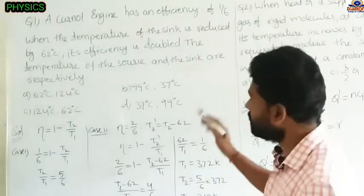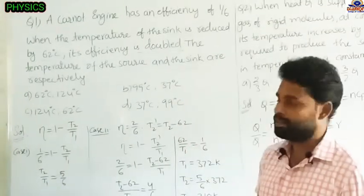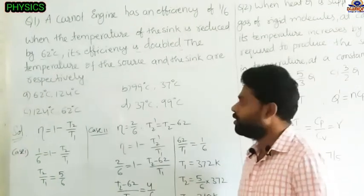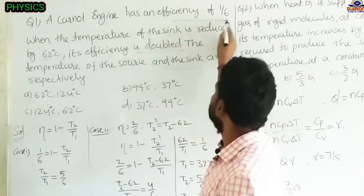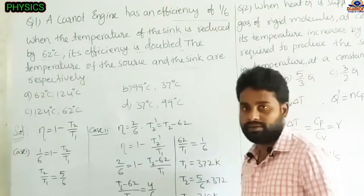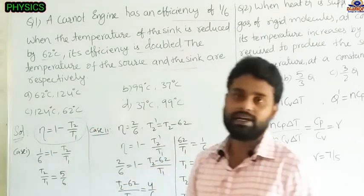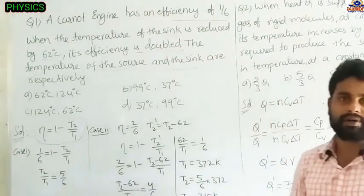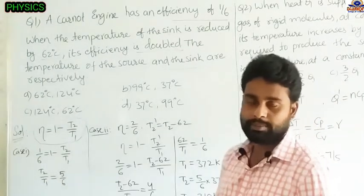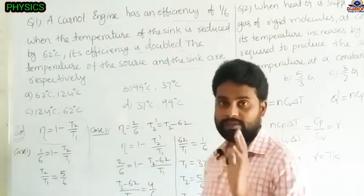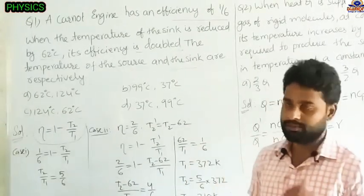In the Carnot engine, temperature values are in absolute temperatures — that means in terms of Kelvin. The efficiency formula for the Carnot engine is η = 1 − T₂/T₁, where T₂ is the temperature of the sink and T₁ is the temperature of the source.